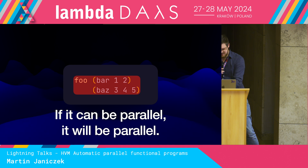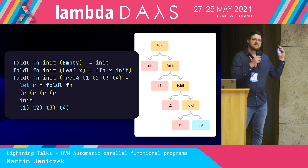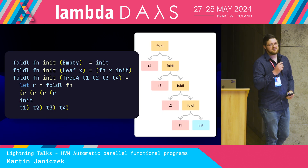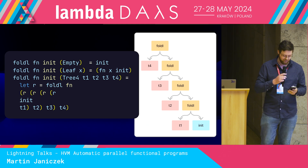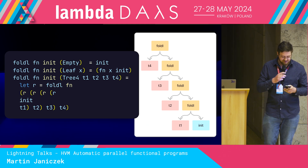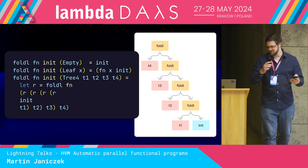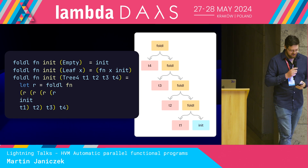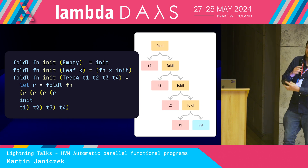Your only way to influence the parallelism is with the shape of your code, of your function calls. For example, you could process your data with a fold, but that's quite sequential — it produces this unbalanced tree call graph.